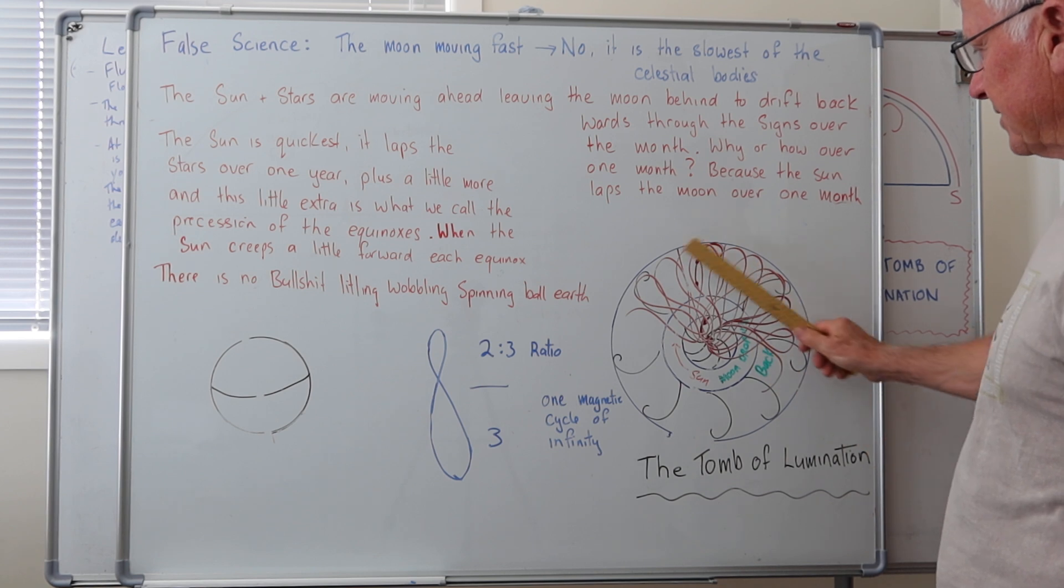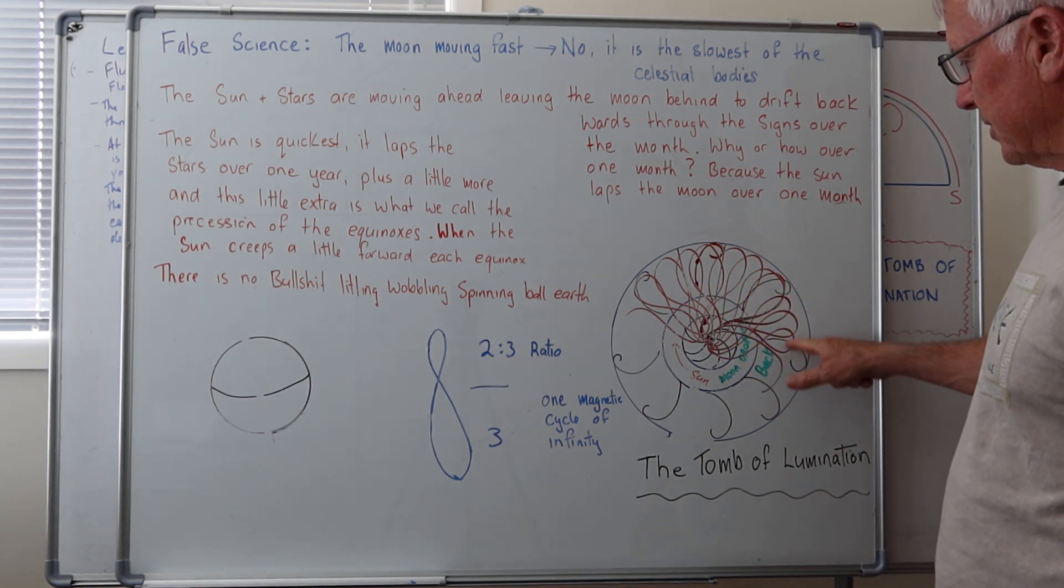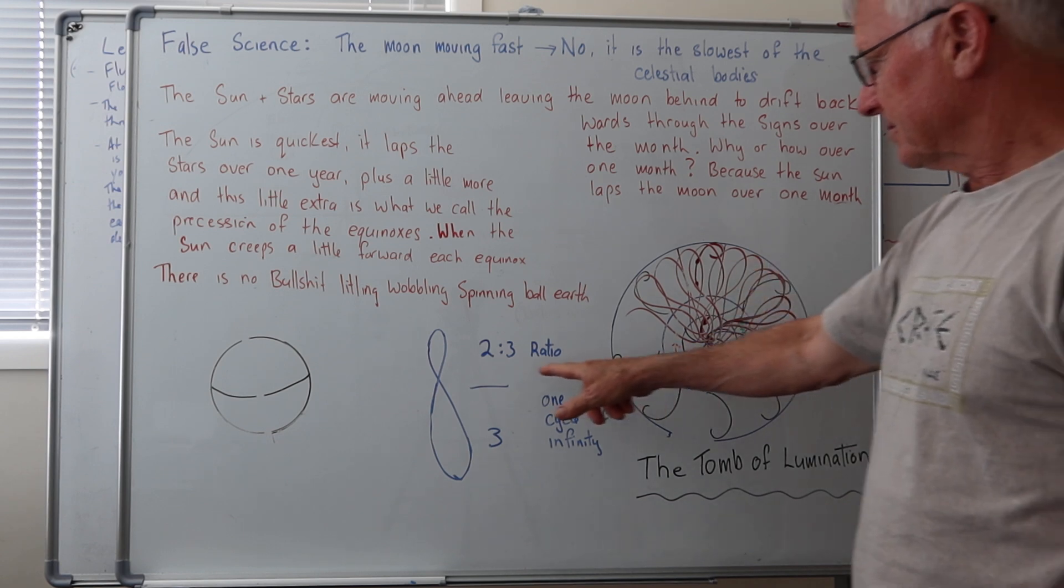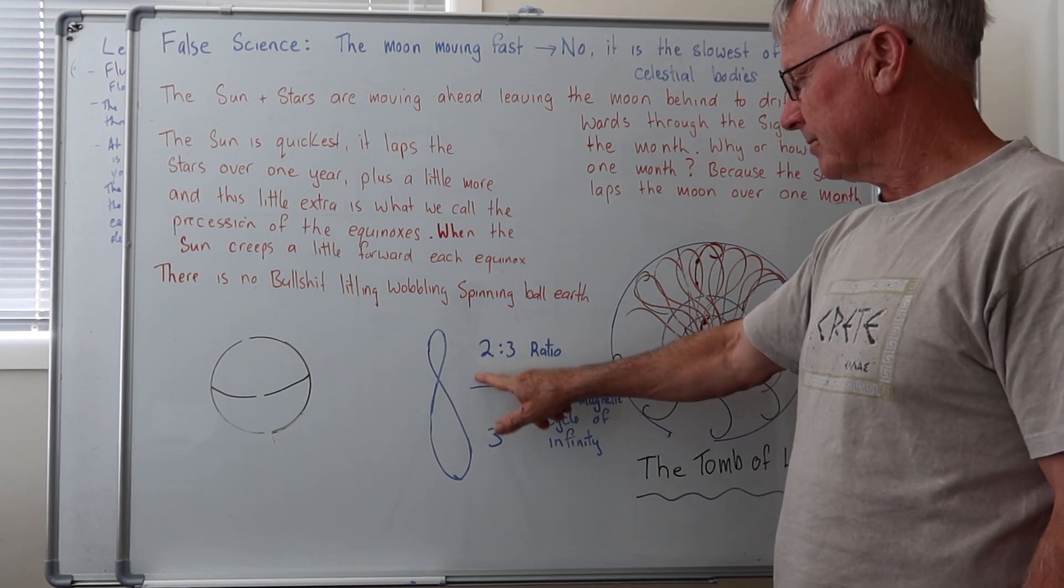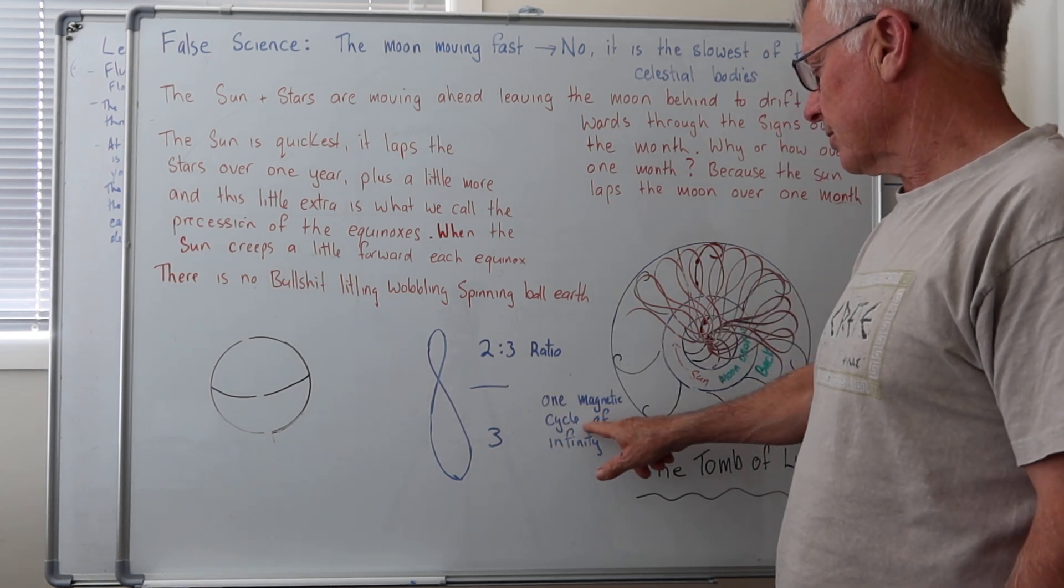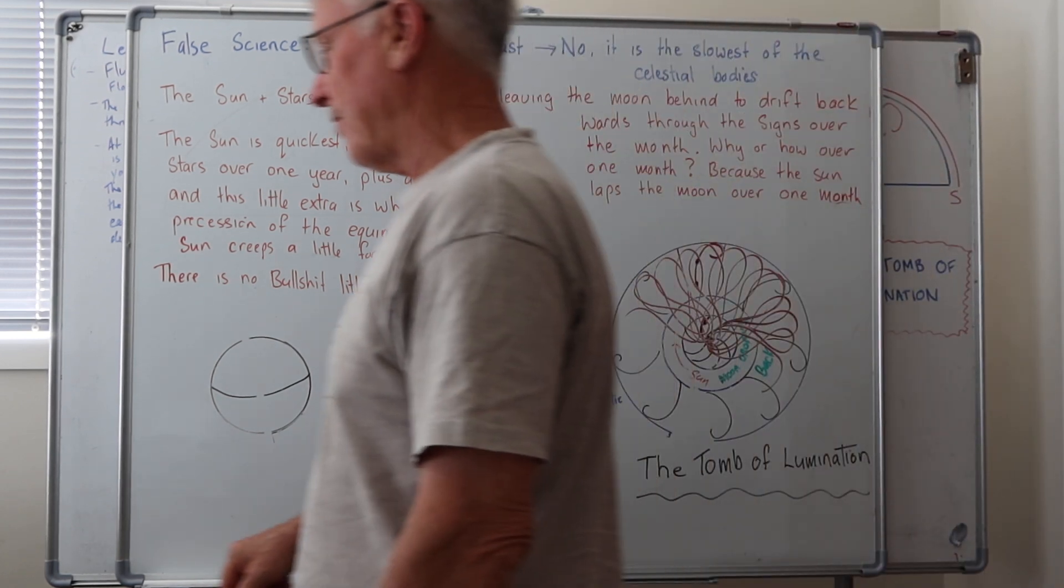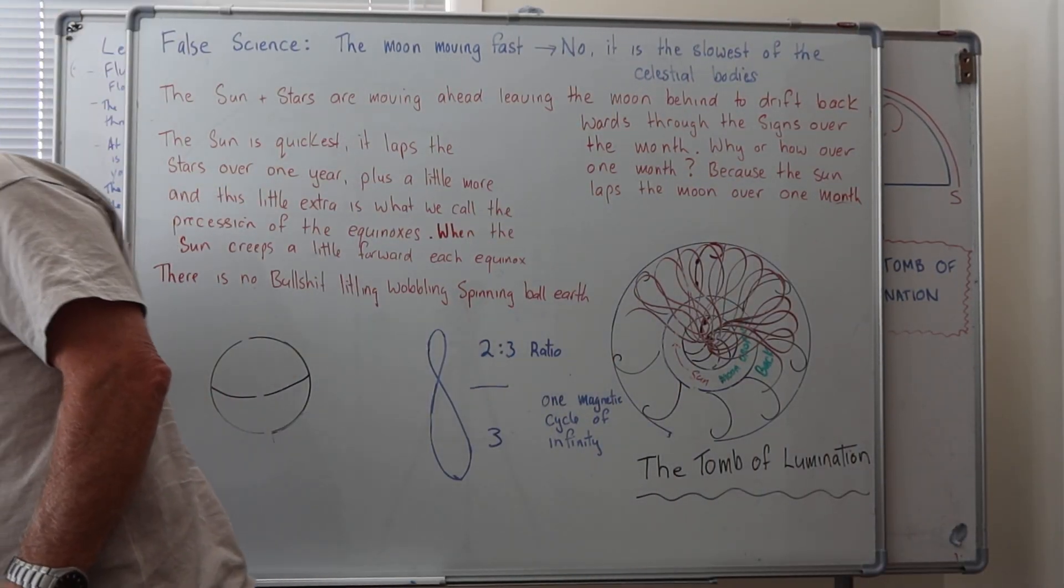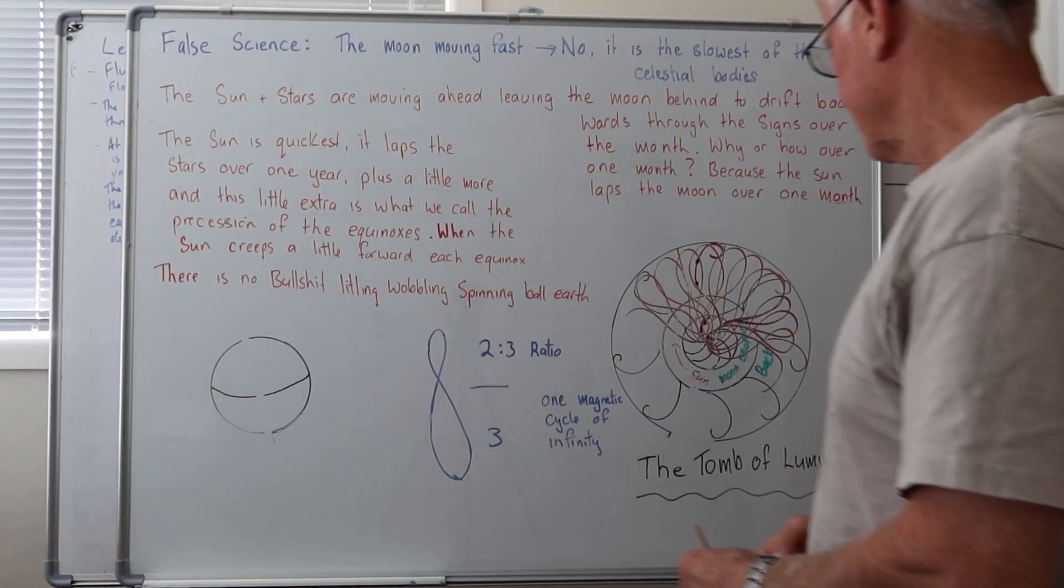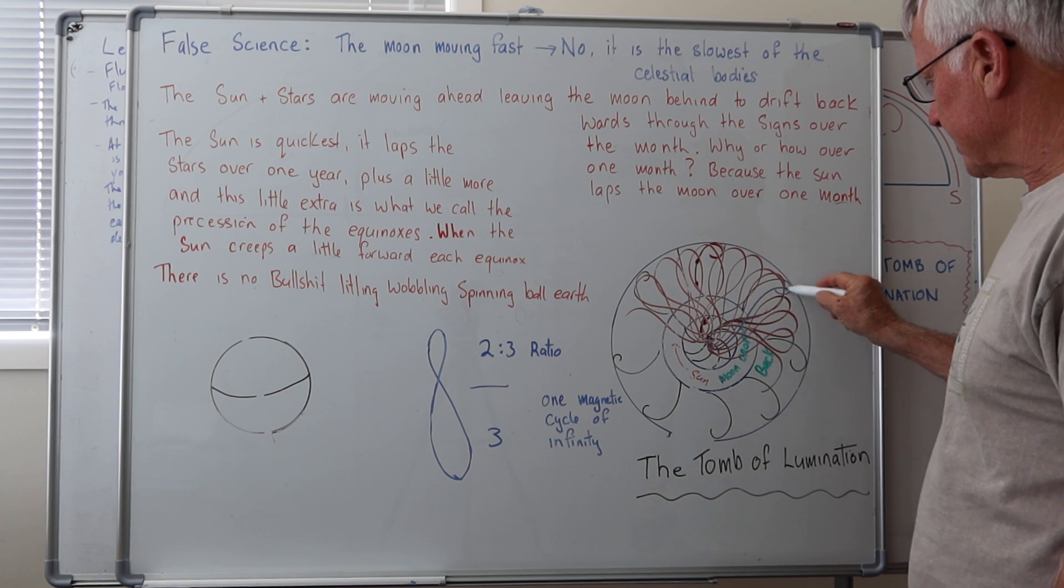So there's your flat earth design. So these are the magnetic cycles. Two to three ratio. Two to three. One magnetic cycle. Of infinity. This is what phi actually is. But no one's taught it. The magnetic cycle. Comes in around the Arctic. Comes back out around the south.